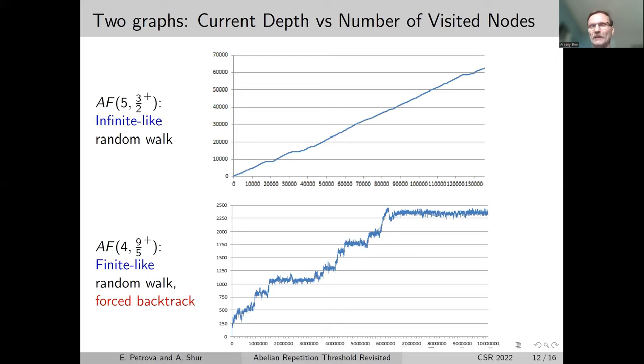What are the typical results obtained with all this machinery? The first type of random walks looks like this graph. On the horizontal axis, you see the number of visited nodes, and this is the current depth. For this language, which is supposed to be infinite, we have such a nearly straight line. We reached a length of 60,000 in slightly over 130,000 nodes. So we steadily go, hopefully, to infinity.